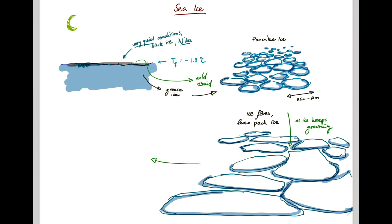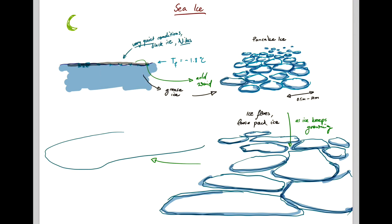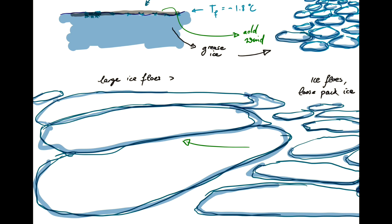And then eventually you get into a region where you just have really large ice flows forming almost a continuous thin sheet of ice floating on the ocean of the order of tens of kilometers.